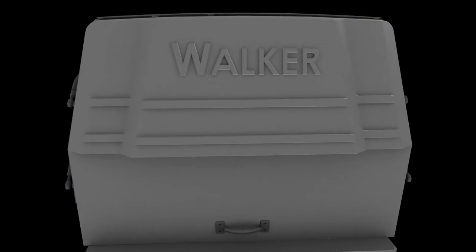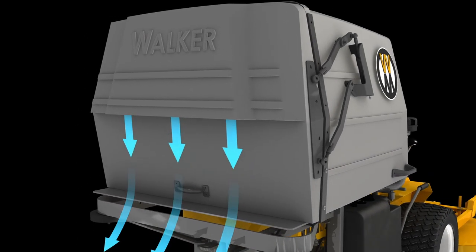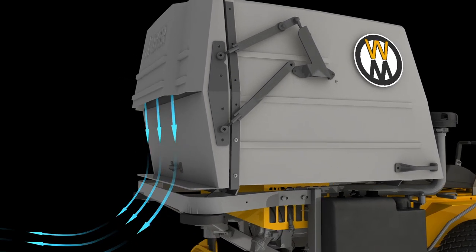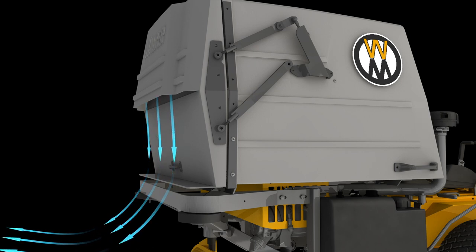Air is released from the grass handling system through the exhaust deflector. Air travels through the exhaust screen and is directed out and down through the catcher door exhaust opening. This helps reduce airborne dust even in dry conditions.